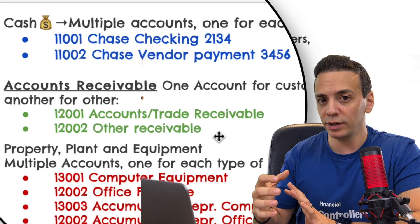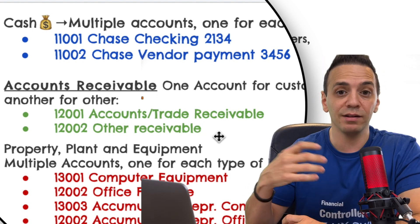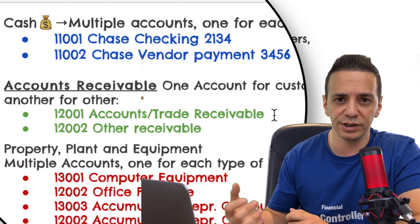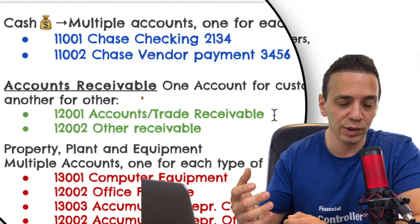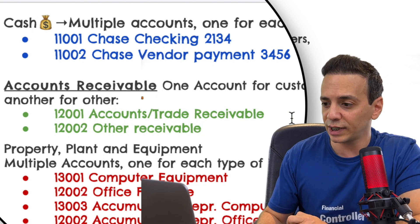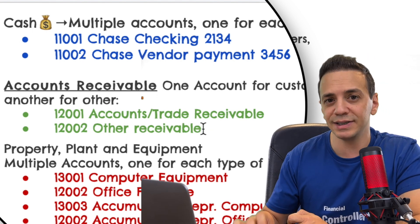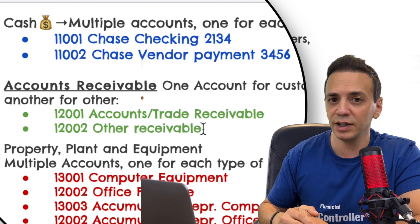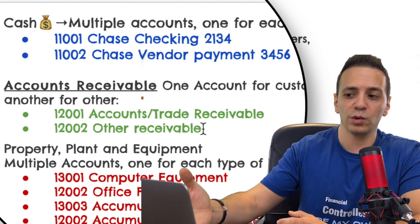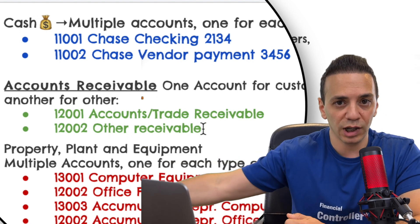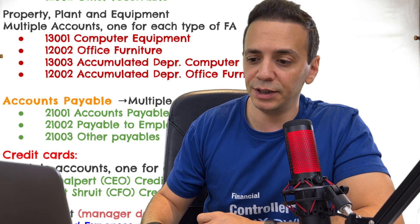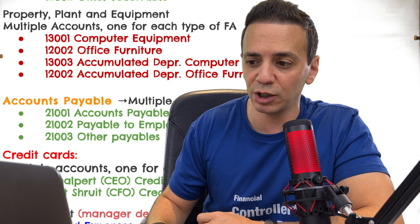For accounts receivable, I like to have one account for receivables from customers and another for other receivables. The customer receivables account is my main one — when I record an invoice it's a debit to receivable and credit to sales revenue. The other receivable account is for items not core to the business, for example collecting taxes from an employee to remit to the IRS for a stock transaction — that's recorded as a receivable from the employee and a payable to the government.